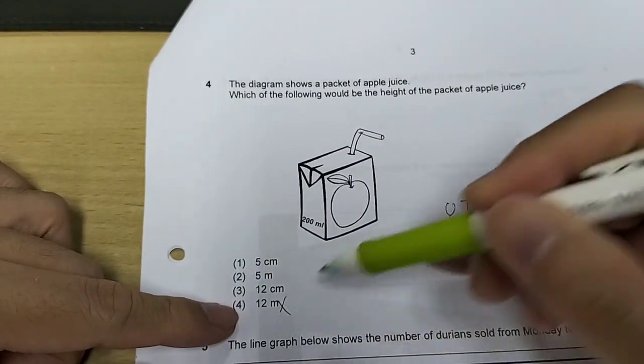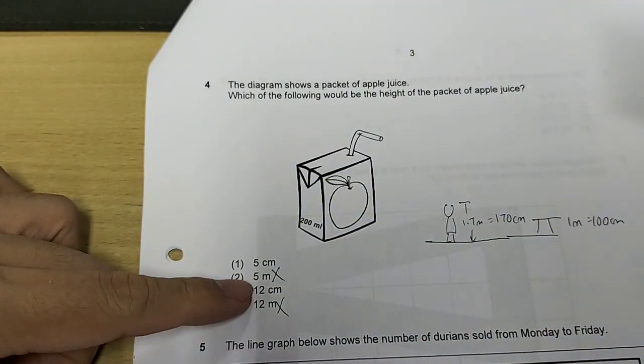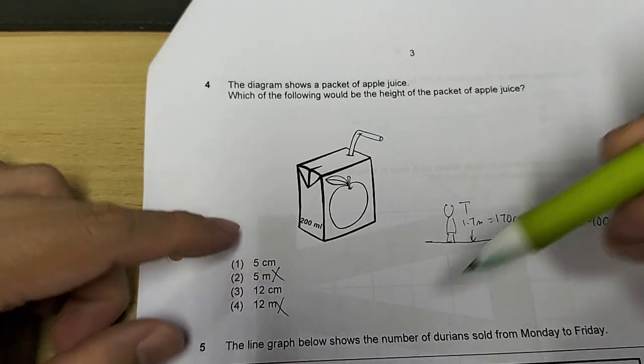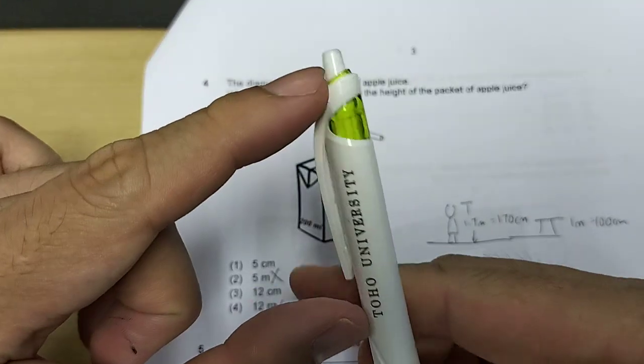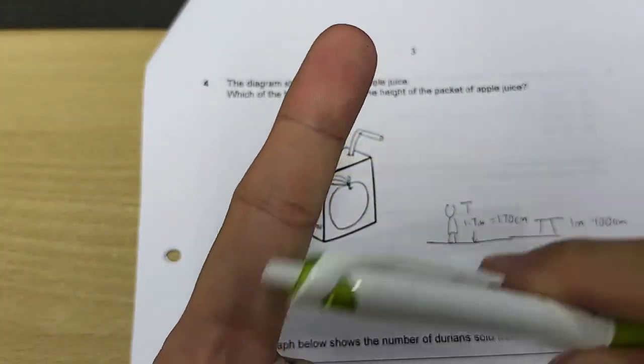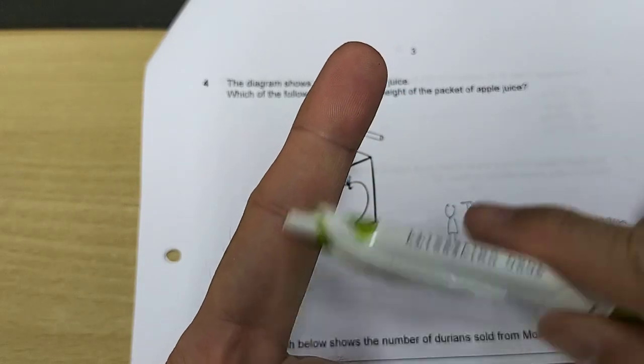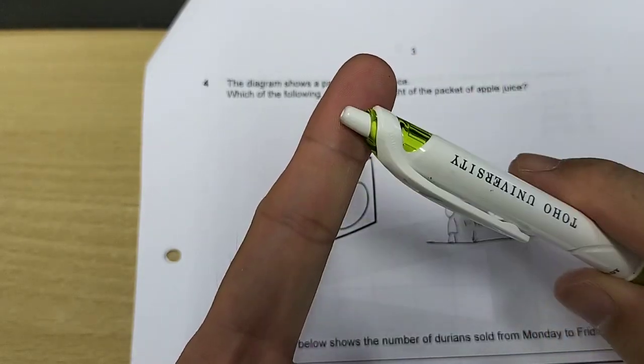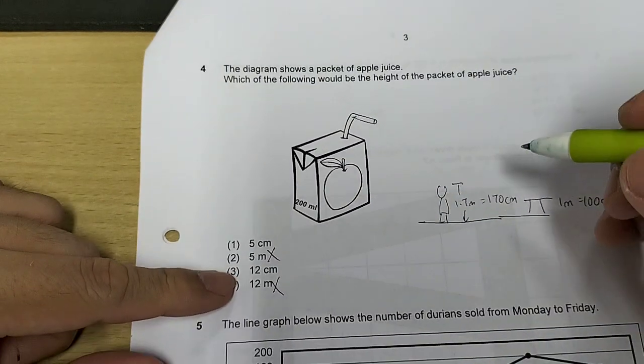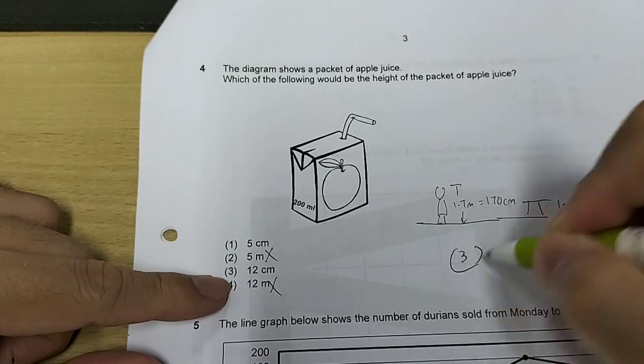So based on this understanding of measurements, you will know that 12 meters does not make sense. 5 meters does not make sense. 5 cm is roughly this long, the length of maybe my finger. The packet drink should be taller than the length of your finger. So 12 cm will make more sense here. Answer here for number 4 is 3.